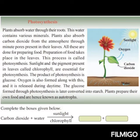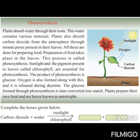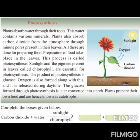Plants also absorb carbon dioxide from the atmosphere through minor pores present in their leaves. Preparation of food takes place in the leaves — this process is called photosynthesis. Sunlight and the pigment present in the leaves called chlorophyll are essential for photosynthesis. The product of photosynthesis is glucose. Oxygen is also formed and is released during daytime. The glucose formed through photosynthesis is later converted into starch. Plants prepare their own food and are hence known as autotrophs.